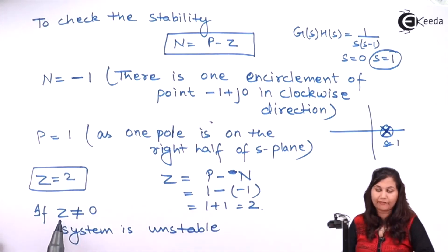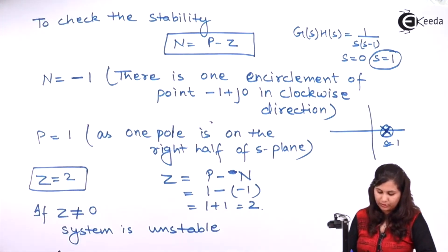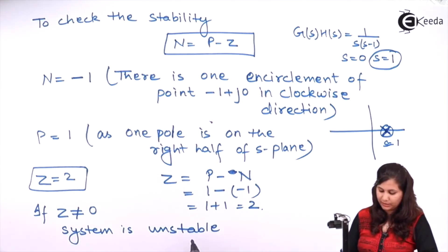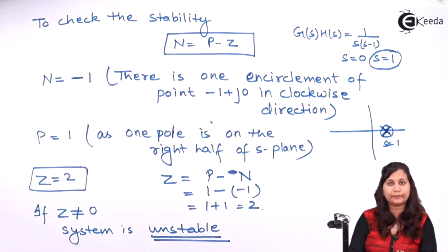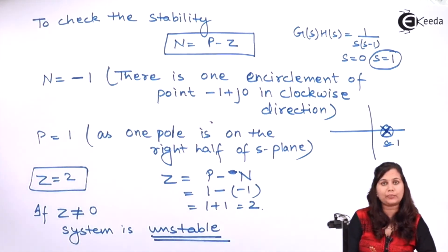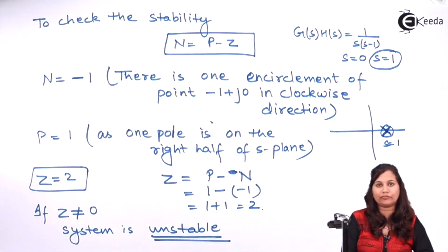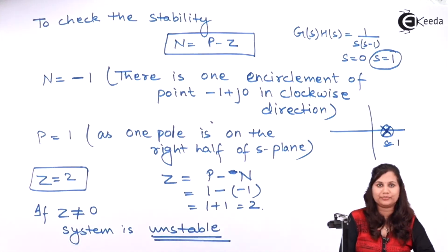Since Z = 2, the system is unstable. In this way, using the Nyquist criteria we have found out the stability of the system. I hope this problem is clear to you. Thank you.